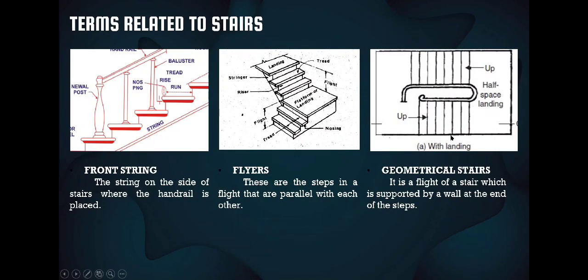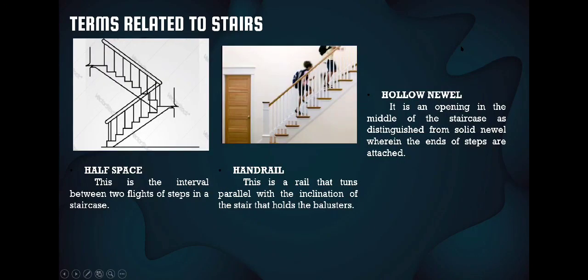The front string is the string on the side of the stairs where the handrail is placed. Flyers are the steps in a flight that are parallel with each other. Geometrical stairs are a flight of stairs supported by a wall at one end of the steps, where the inner line of the stair is supported by a handrail or railing and the other side is supported by a wall. Half space is the interval between two flights of steps in a staircase.